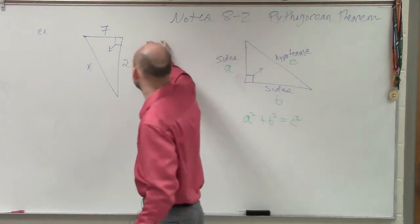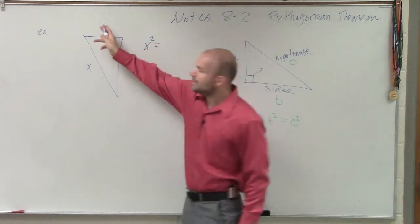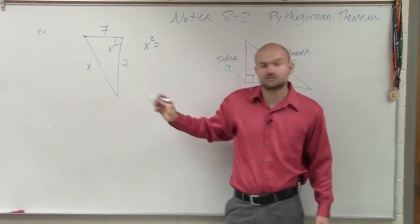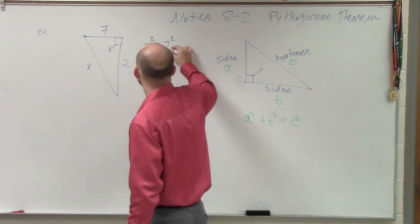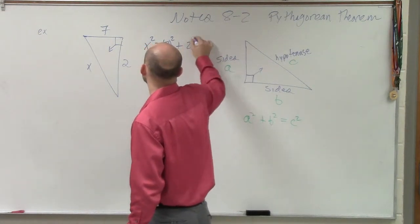So I'll write x squared is equal to, and these are my two, the sum of my two squares. So x squared equals 7 squared plus 2 squared.